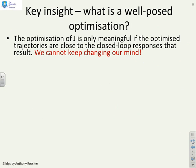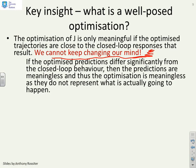Some key insights then. What is a well-posed optimisation? The optimisation of J is only meaningful if the optimised trajectories are close to the closed-loop responses that result — in other words, we cannot keep changing our mind. If we keep changing our mind, the optimum we thought at one sample clearly wasn't optimum at all. So the optimised trajectories must be close to the final trajectory we actually follow. If the optimised predictions differ significantly from the resulting closed-loop behaviour, then the predictions are meaningless, and thus the optimisation is meaningless, as they do not represent what is actually going to happen.